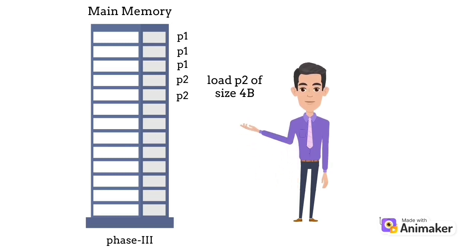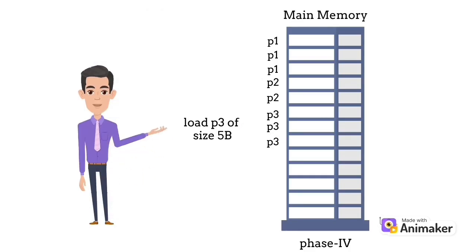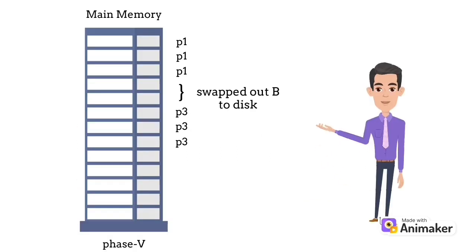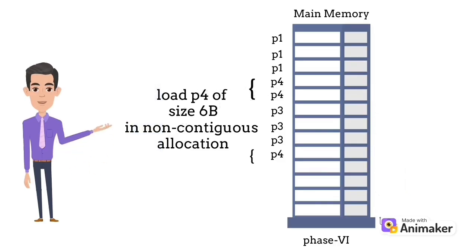After P1 location, coming into phase four, P3 of size five bytes is stored in main memory as shown there. After P2 location, in the next phase, P2 is swapped out from main memory. After P1 location, the occupied frames of P2 become vacant. In the next phase, P4 needs three frames, so it will be assigned to three non-contiguous locations.